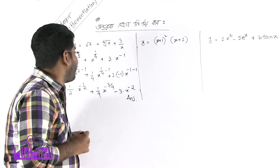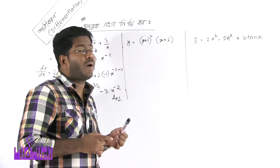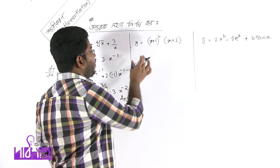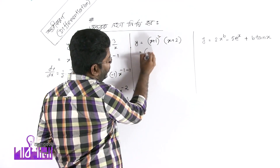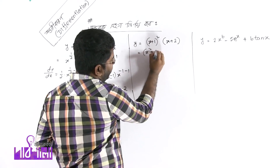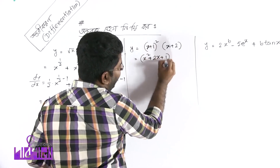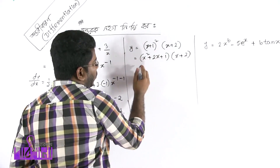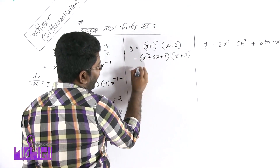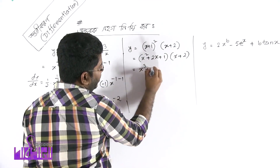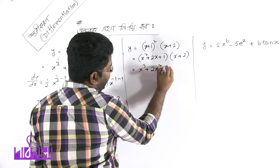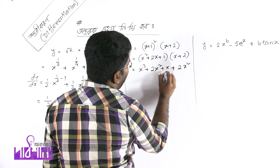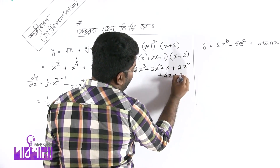Second example: y equals (x+1) whole square into (x+2). We expand (x+1)² as x² + 2x + 1, then multiply by (x+2) to get x³ + 2x² + x + 2x² + 4x + 2, which simplifies to x³ + 4x² + 5x + 2.